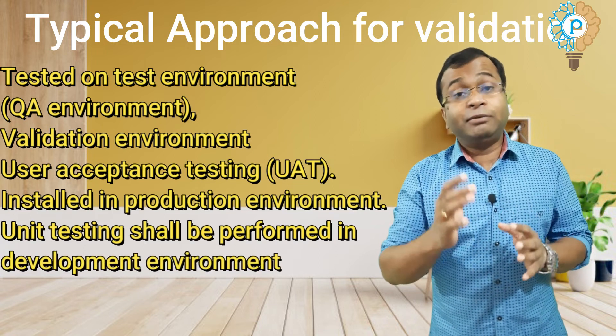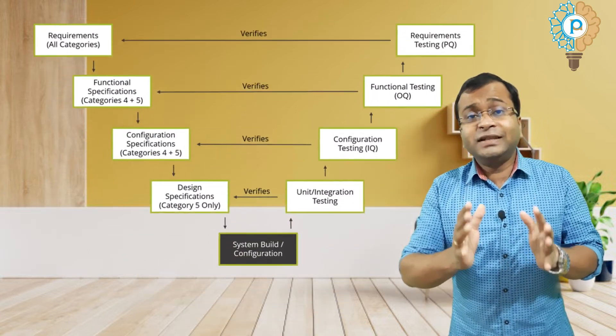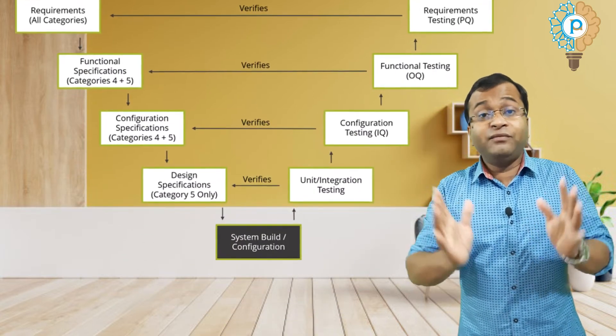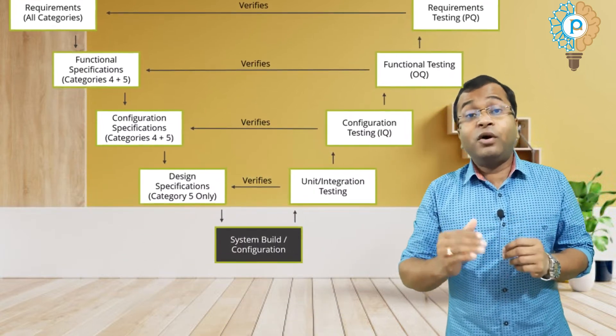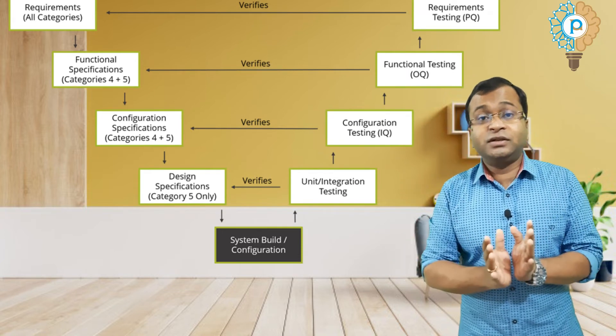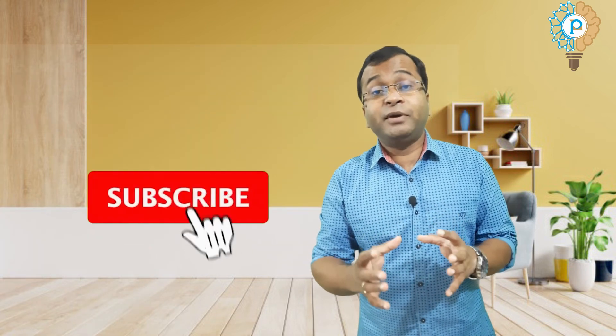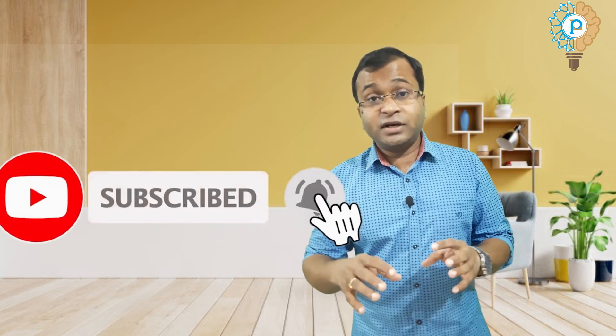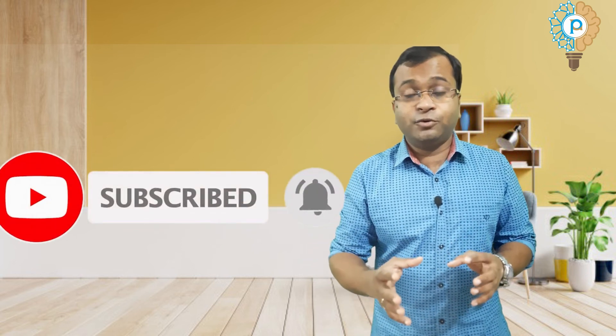In the GAMP 5 guideline, a V-structure is available for computer system validation. I will discuss the V-structure in my next video. If you have any doubt regarding this video, computer system validation, the categorization of software, or the type of requirements for software qualification, please comment — I will definitely reply. If you are new to my channel, please subscribe and hit the bell icon. Thank you.